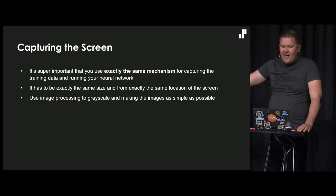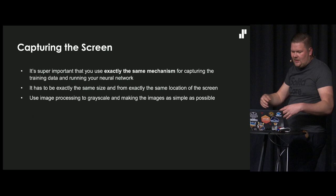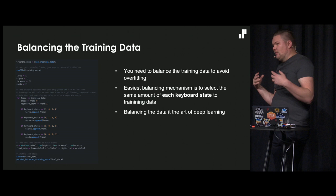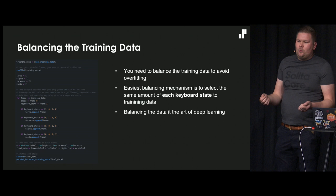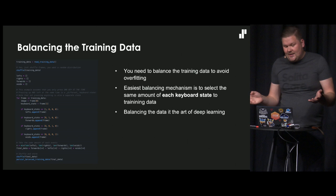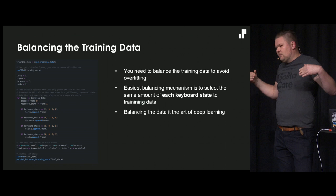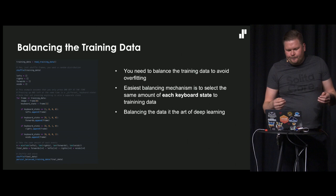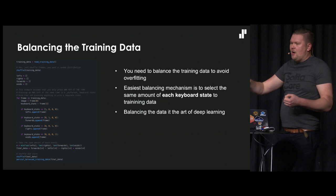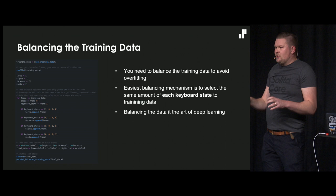You need to make it simple - drop colors, try to make it as simple as possible. Now you have raw training data, but it doesn't work straight with raw data. You have to do something called balancing the data. The common problem with neural networks is overfitting, which in my games would mean the player would go always just straight.